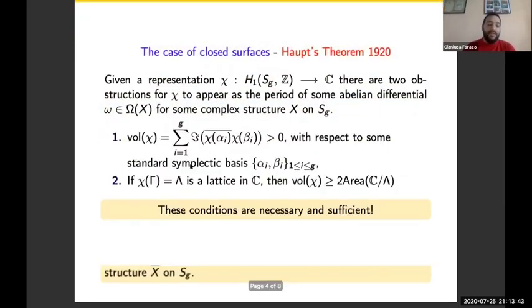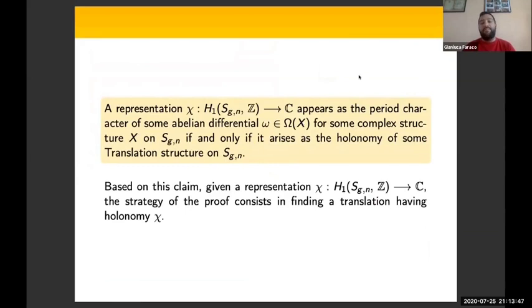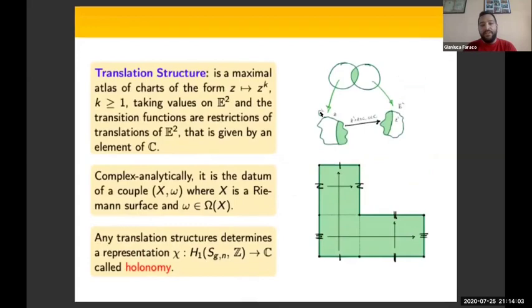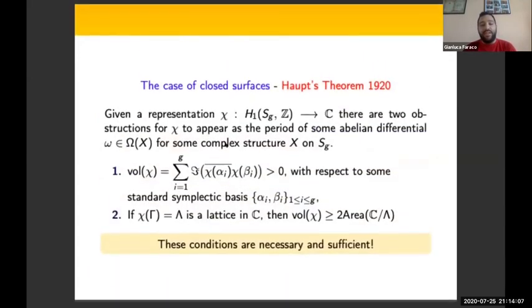It happens that a representation χ appears as the period character of some abelian differential ω with respect to some complex structure X if and only if it arises as the holonomy of some translation structure.